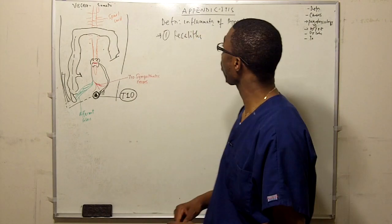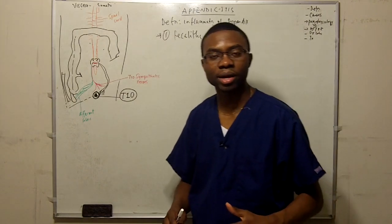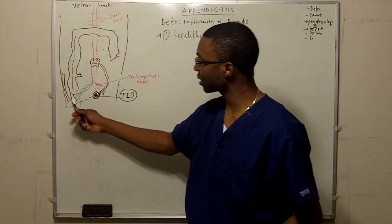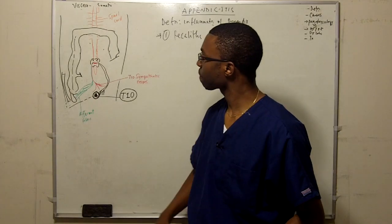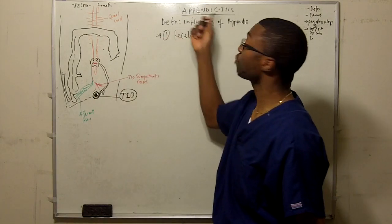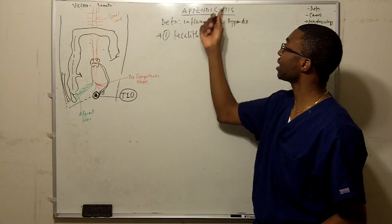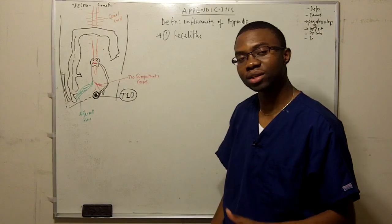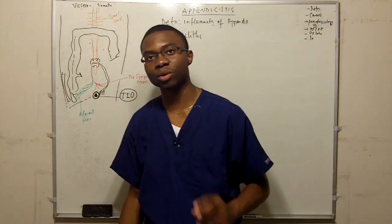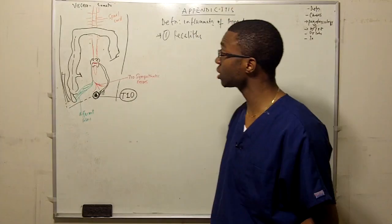The first thing I want us to go over is the definition. This is the appendix in this picture right here. If we break the word into two, appendicitis is the inflammation of the appendix. Very simple, but it's not that simple. Let's find out exactly what's causing it.